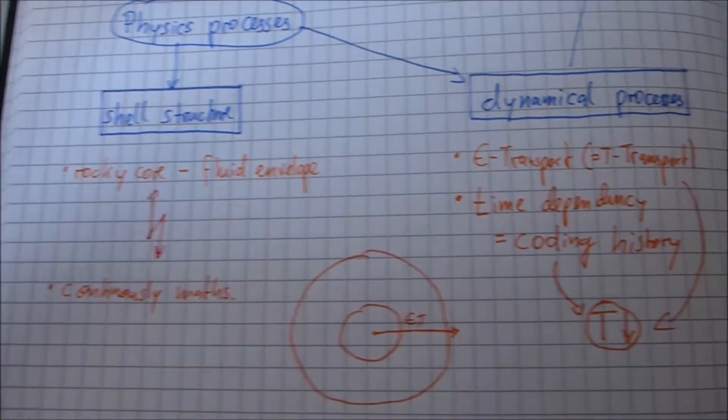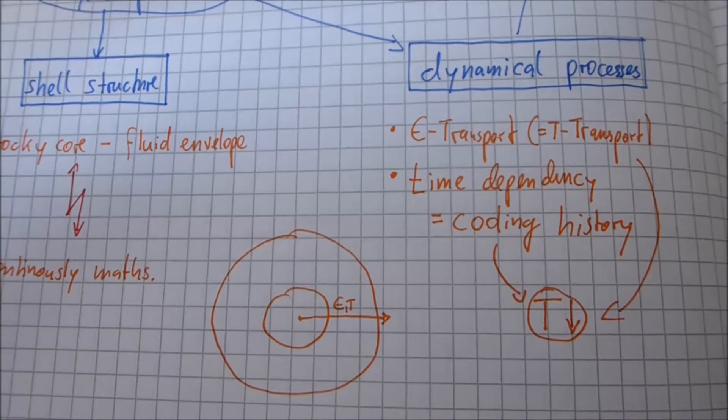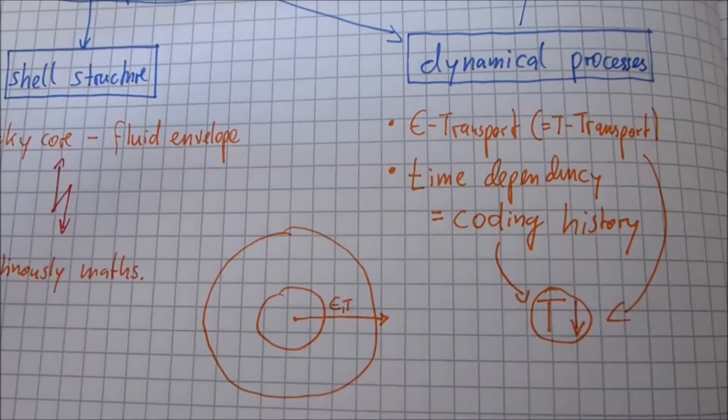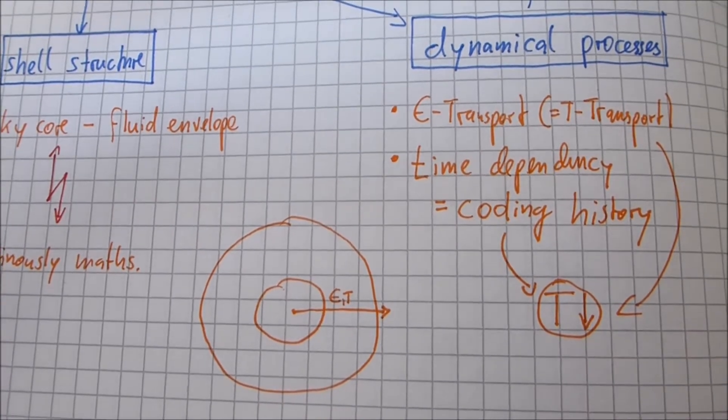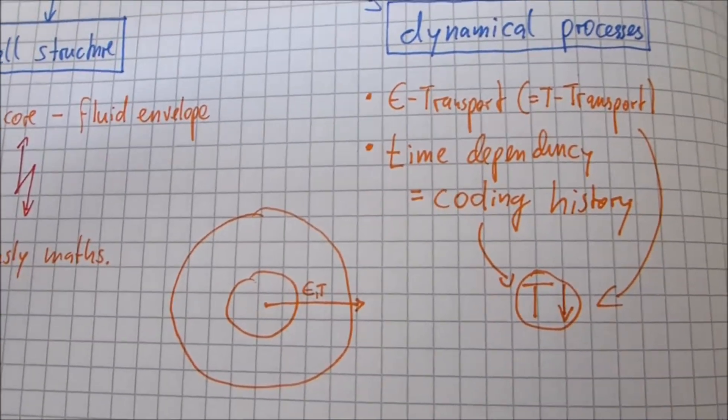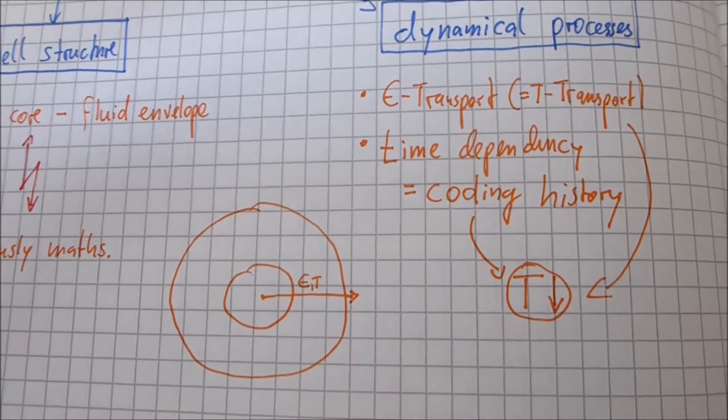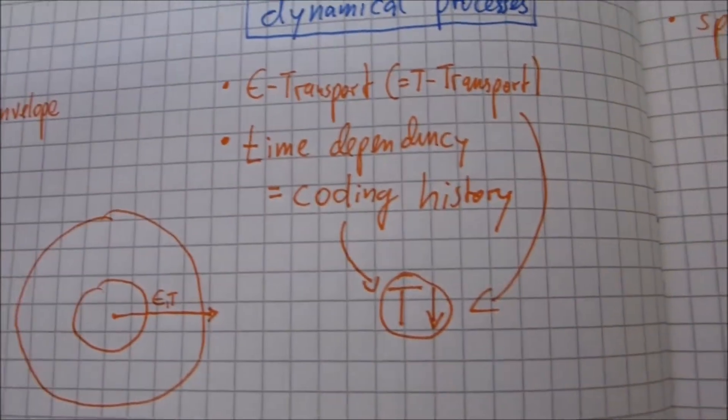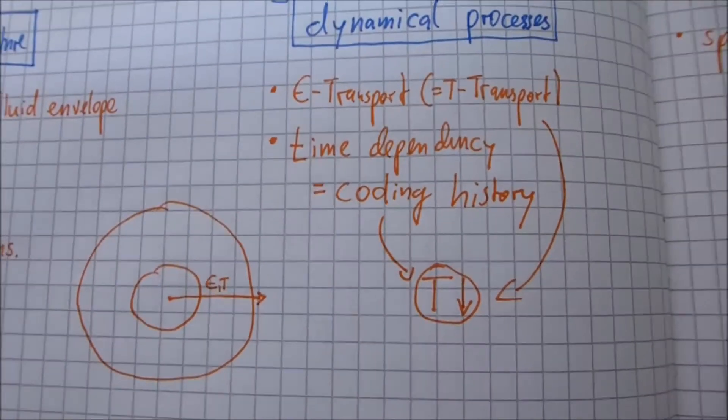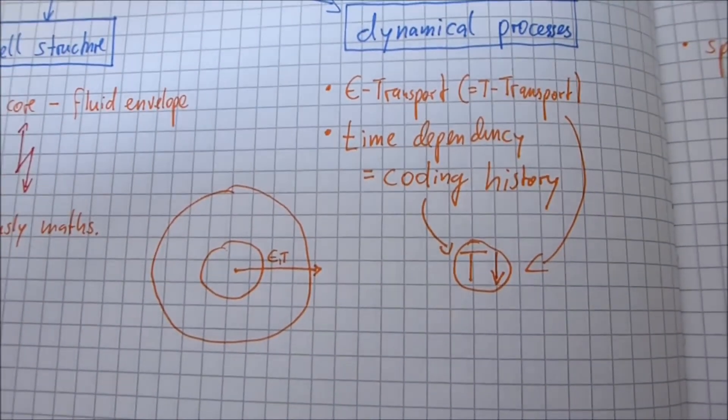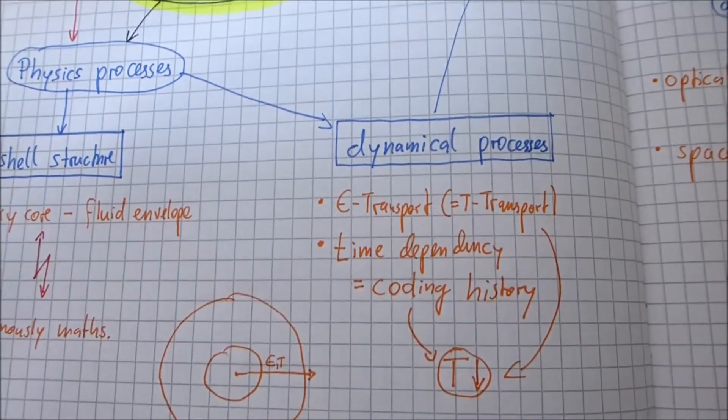And on the other side, we have also dynamical processes. So we have an energy transport, what is similar to temperature transport. And also a time dependency, so a cooling history. That means that the planet cools down over time. And if we would consider these two points, the temperature would shrink. And what we see was the temperature was too high. So maybe these considerations are maybe useful.